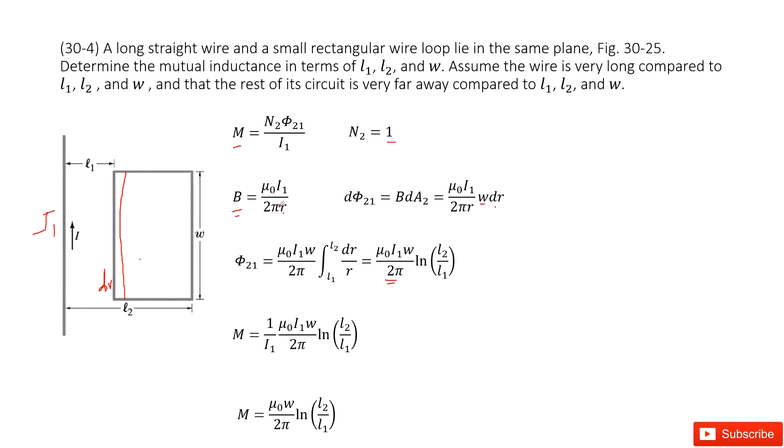Now we input Φ21 inside. And as we talked about, N2 is 1. So the equation looks like this one. We can say I1, I1 cancelled. So we get the final answer there. Thank you.